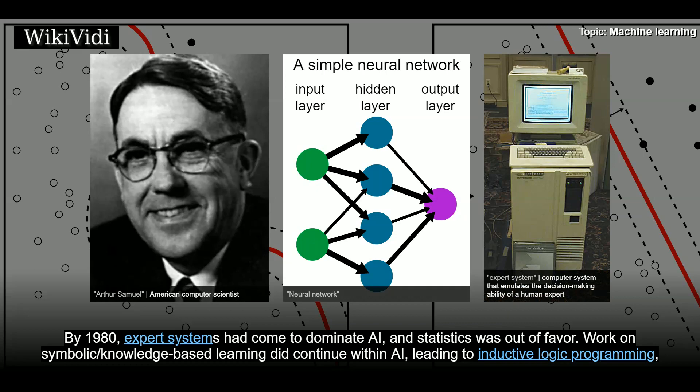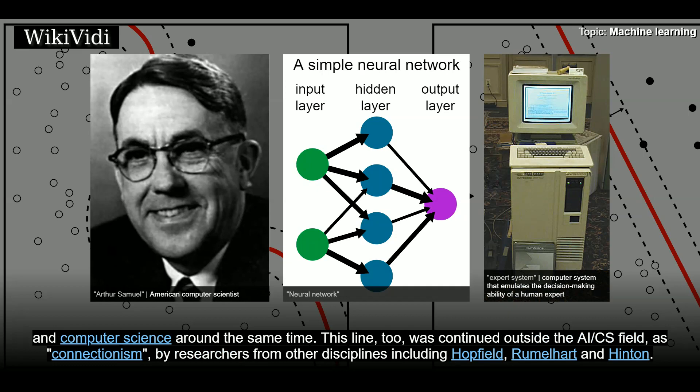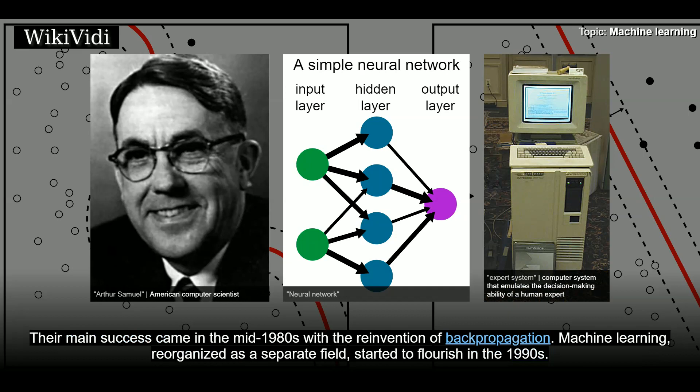But the more statistical line of research was now outside the field of AI proper in pattern recognition and information retrieval. Neural networks research had been abandoned by AI and computer science around the same time. This line, too, was continued outside the AI-CS field as connectionism, by researchers from other disciplines including Hopfield, Rumelhart, and Hinton. Their main success came in the mid-1980s with the reinvention of backpropagation.